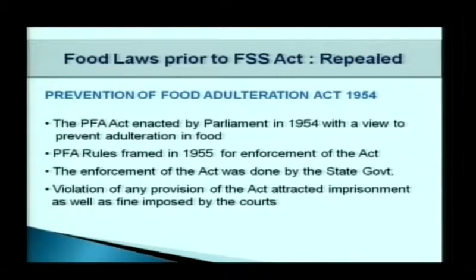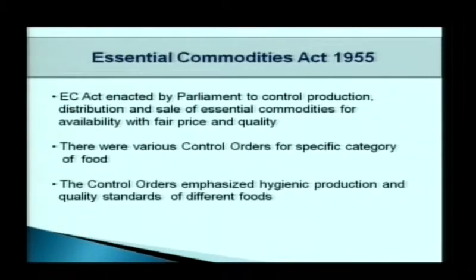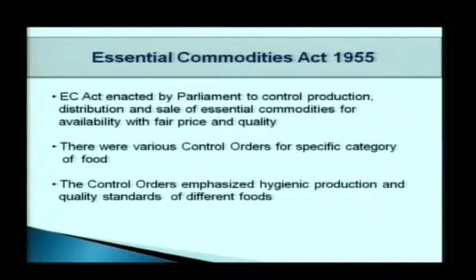Violation of any provision of the PFA Act attracted imprisonment as well as punishment imposed by the court. There is another act called the Essential Commodities Act 1955. During this period, it was observed that there was a shortage of essential commodities — an artificial shortage created by unscrupulous businessmen for profit through hoarding. Essential commodities were not easily available and were sold at high prices, so this act was enacted to control that.